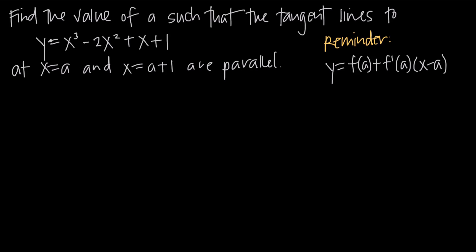In other words, if we're given this equation y in terms of x and we're told to find the equation of the tangent line at x equals 4, then a is equal to 4, and we just plug 4 into the equation. For f prime of a, we would take the derivative of our equation and plug in a — in this hypothetical example, plug in 4 — and plug that result in for f prime of a. Then for x minus a, we'd say x minus 4, since a is 4. We simplify and that gives us the equation of the tangent line.